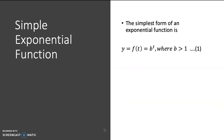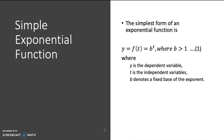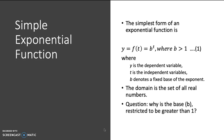The function shown here is the simplest form of an exponential function: y as a function of t equals b to the power of t, where b is greater than 1. It is defined that y is the dependent variable, t is the independent variable, and b denotes a fixed base of the exponent. The domain is the set of all real numbers. As a question for you to think: why is the base b restricted to b greater than 1? So, let's take a look at the graphical representation of an exponential function.